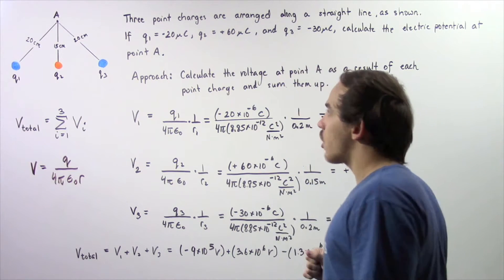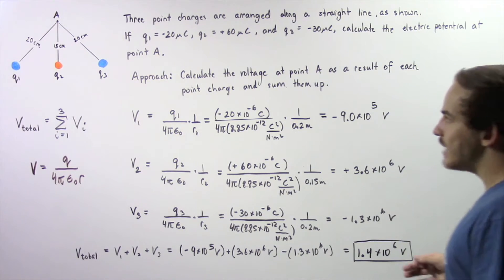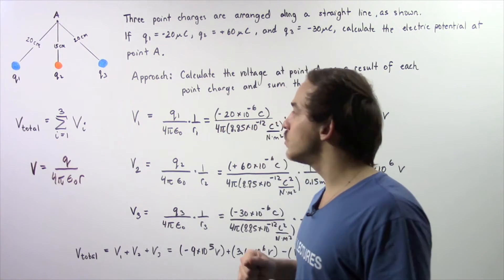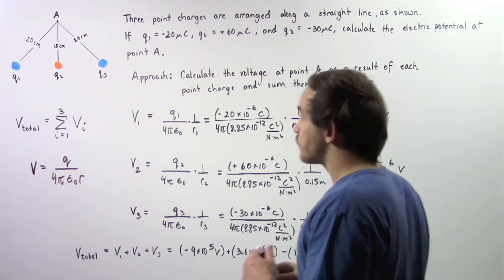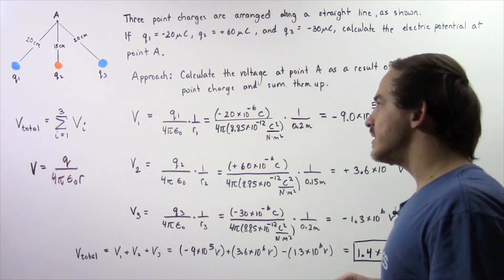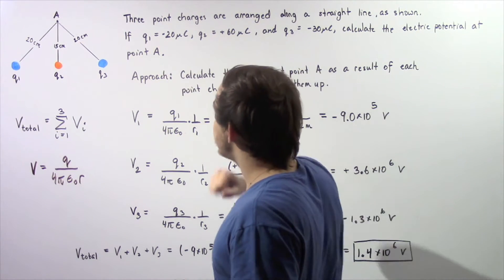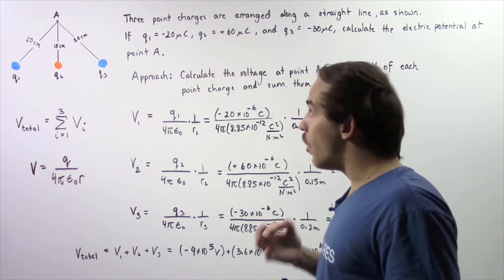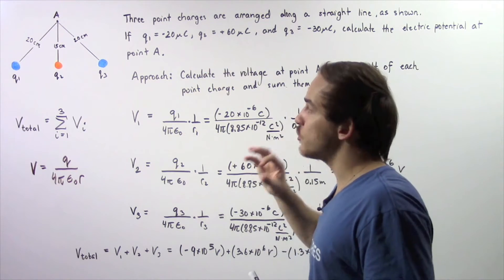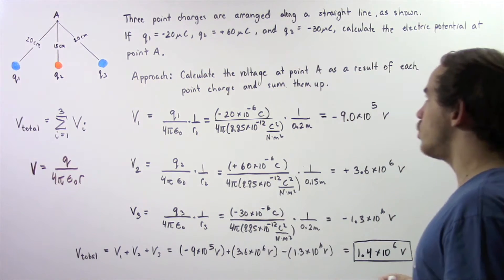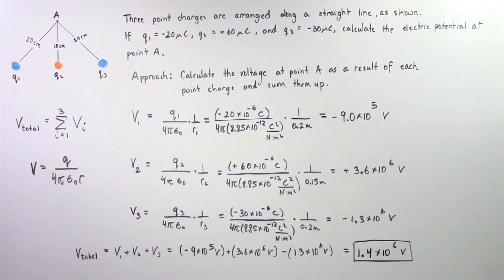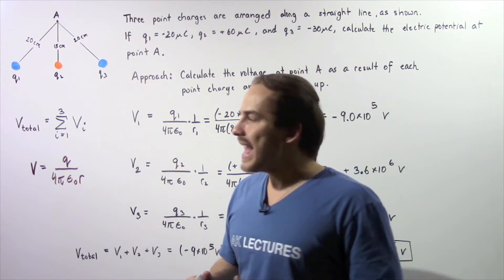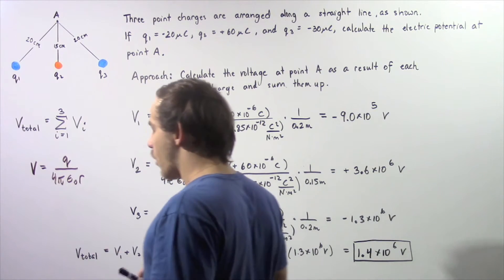Three point charges are placed along a straight line as shown in the diagram. Charges Q1, Q2, and Q3 lie along the x-axis. The quantity of charge on Q1 is equal to negative 20 microcoulombs, Q2 is equal to positive 60 microcoulombs, and Q3 is equal to negative 30 microcoulombs. Calculate the electric potential at point A as a result of these three point charges.